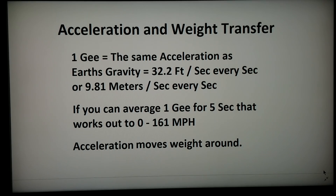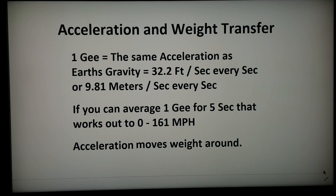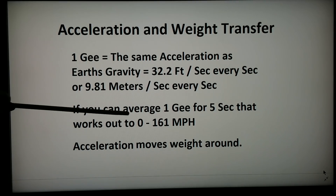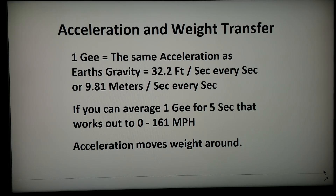I want to define 1G as the acceleration that is the same as Earth's gravity. That works out to be equal to 32.2 feet per second every second, or in SI units, 9.8 meters per second every second. If you can average 1G for five seconds, that works out to right at 0 to 161 miles per hour in those five seconds. With acceleration, weight moves around the car.